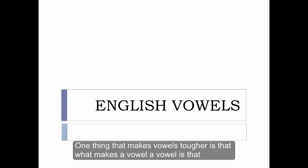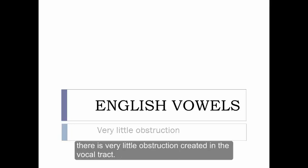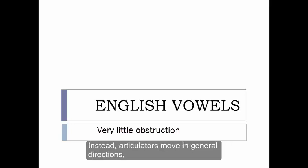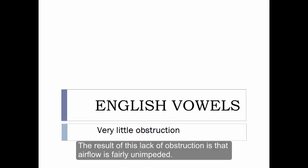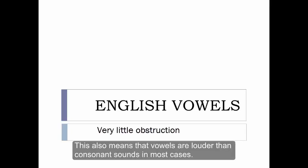One thing that makes vowels tougher is that what makes a vowel a vowel is that there's very little obstruction created in the vocal tract. Instead, articulators move in general directions without actually making contact with any of the upper surfaces. The result of this lack of obstruction is that airflow is fairly unimpeded. This also means that vowels are louder than consonant sounds in most cases.